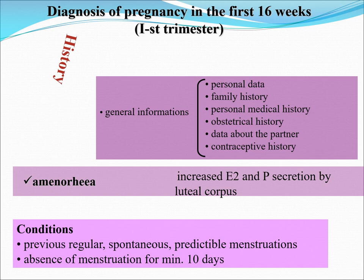For the first 16 weeks in the first trimester, diagnosis of pregnancy would usually resort to history. General information should be obtained, such as personal data, family history, personal medical history, OB history, data about the partner, and contraceptive history. History of amenorrhea would signify increased estrogen and progesterone secretion by the corpus luteum. Conditions to note would be previous regular, spontaneous, and predictable menstruation now resulting in amenorrhea, and an absence of menstruation for a minimum of 10 days, which would translate to a delay of menses for about 2 weeks.